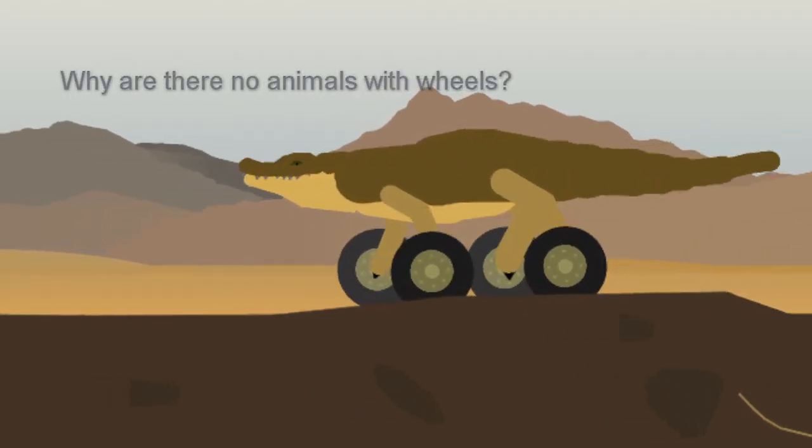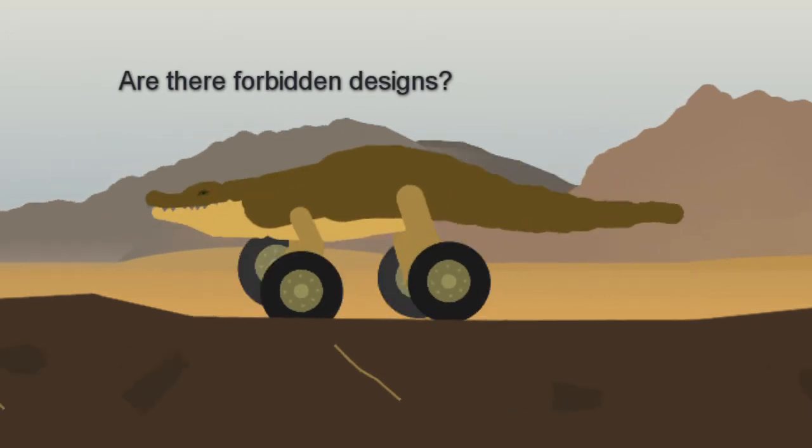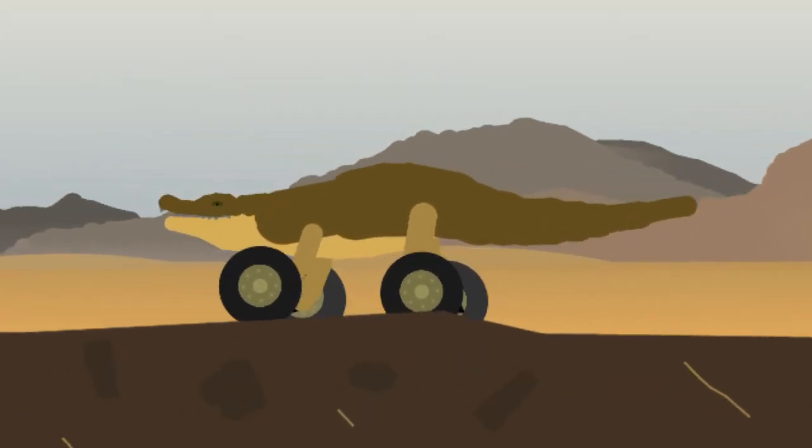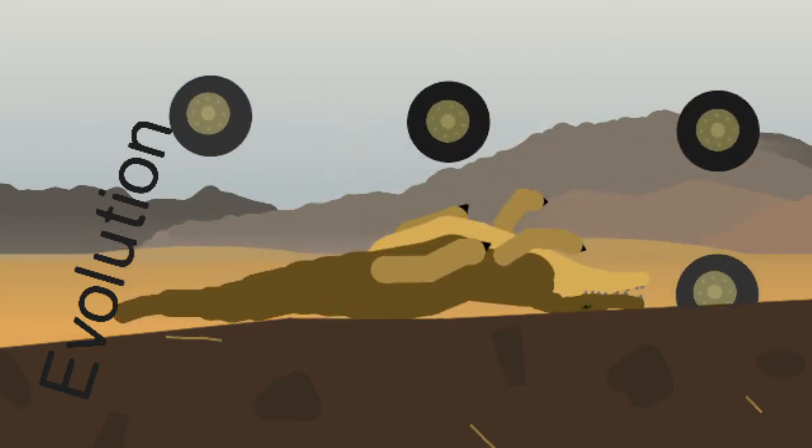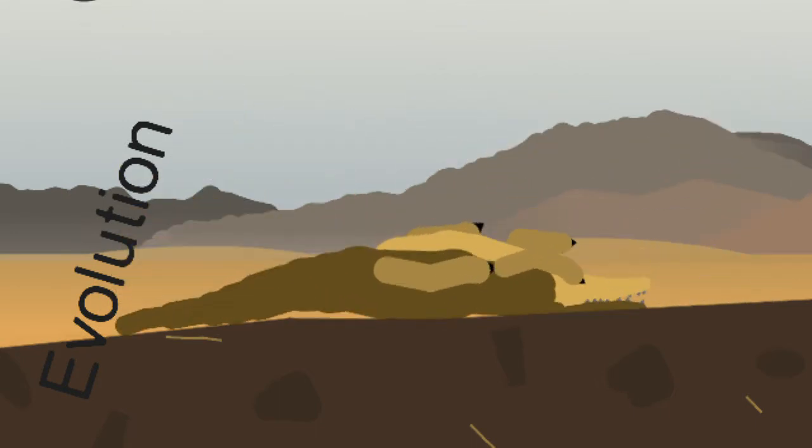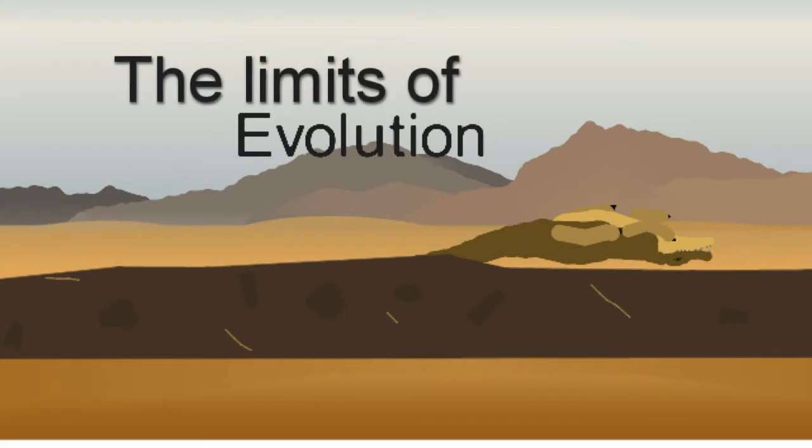Why are there no animals with wheels? What are the limits of evolution? Are there forbidden designs? If we would wish to use evolutionary processes to optimize our own designs, then we must better understand what natural selection and evolution can and can't achieve. We must better understand the limits of evolution.